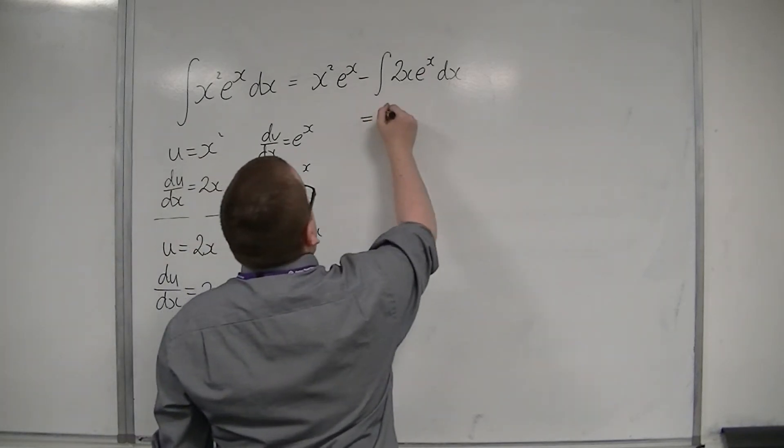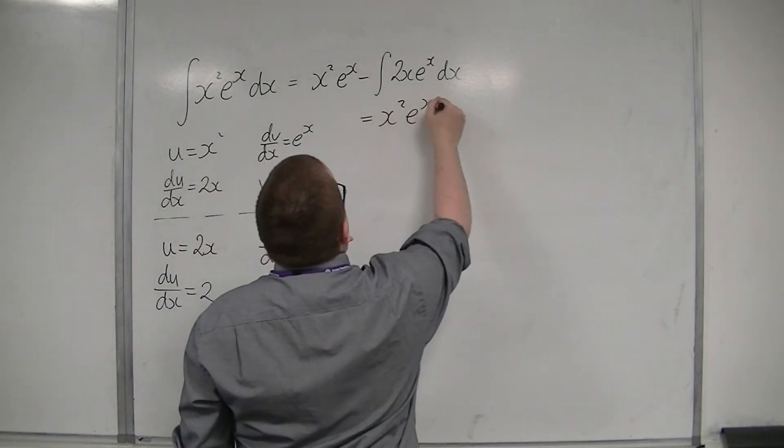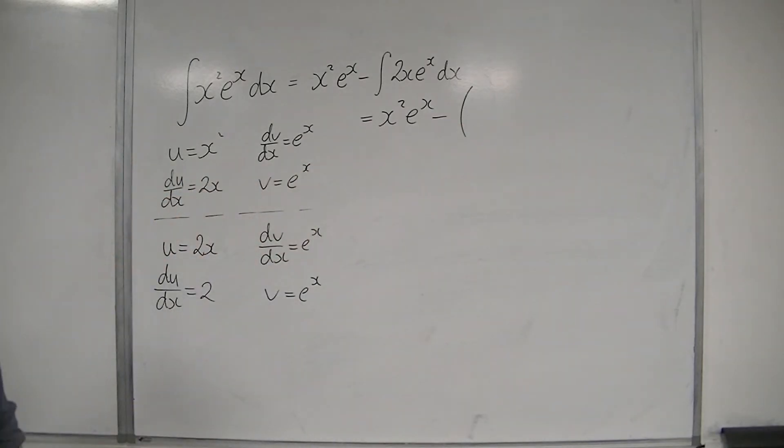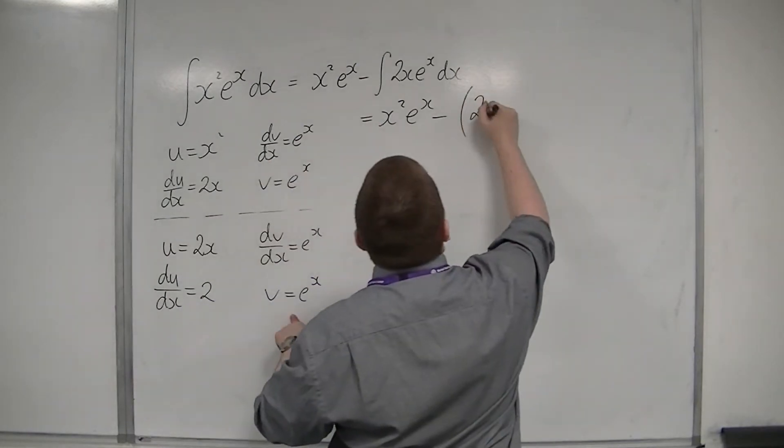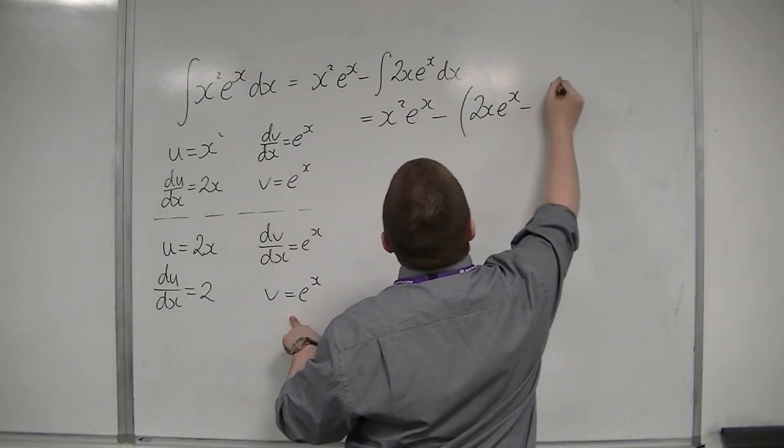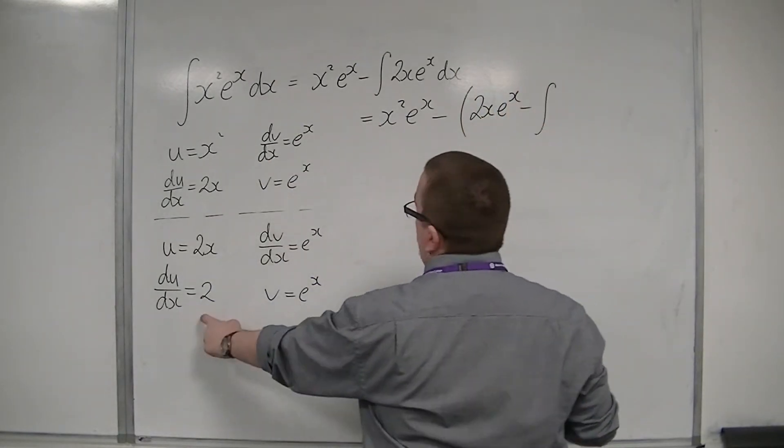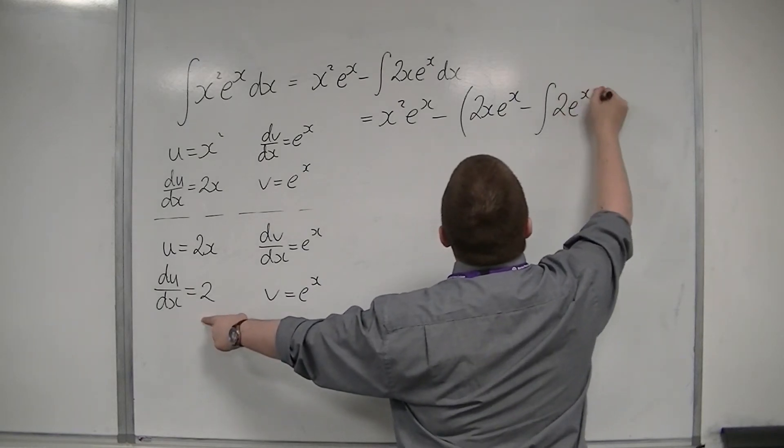So I've got to make sure I draw a bracket here, because I'm taking away u times v, so 2x e to the x, take away the integral of v du by dx, so 2 e to the x dx.